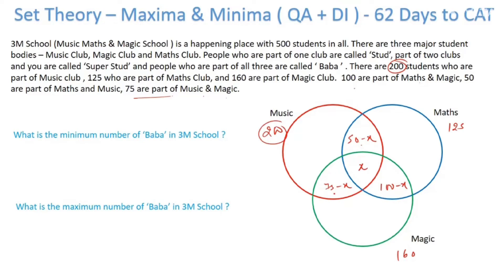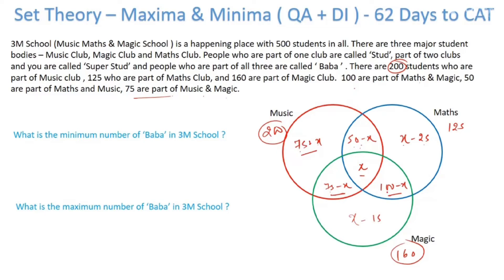What remains for only Music: combining 50 minus x, x, and 75 minus x gives 125 minus x, so only Music is 75 plus x. Counting all elements: 75 + 50 + 75 = 200, plus x + x minus x minus x, which cancels to 200. For only Maths: 50 minus x + x + 100 minus x = 150 minus x, which I write as x minus 25 after accounting for the total 125. For only Magic: similarly, that becomes x minus 15, since 75 minus 15 = 60, plus 100 = 160.